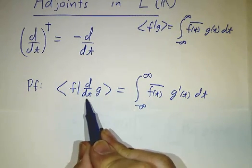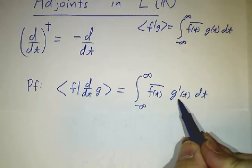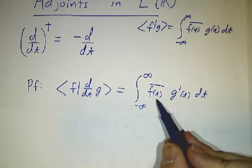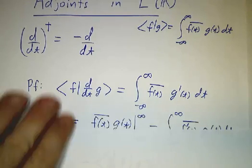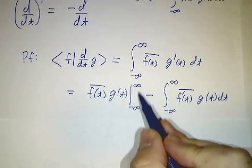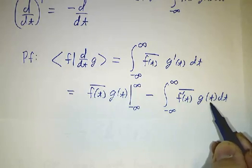See, f operator acting on g, by definition that's the integral of f bar times the derivative of g dt. But if you integrate by parts, that tells you that it's f bar times g at the end points minus the integral of f bar prime g dt.